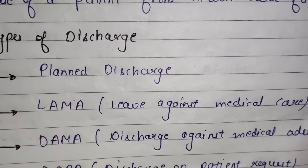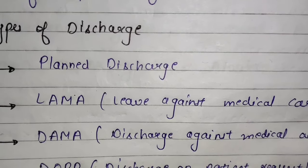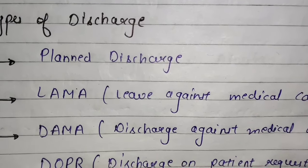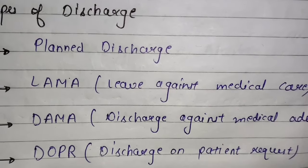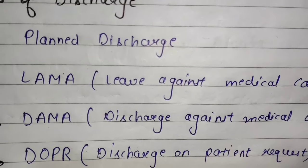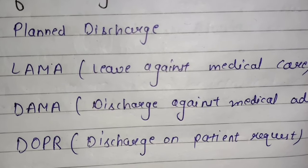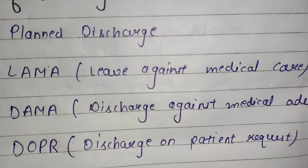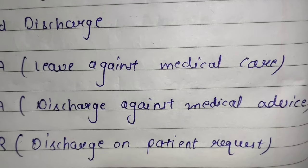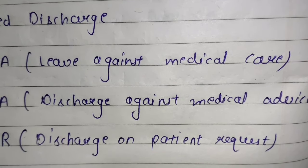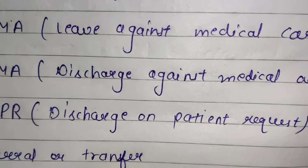Third is DAMA — discharge against medical advice — ismein jo patient hota hai, apne aap ko khud discharge kar leta hai hospital se; jo discharge hota hai, wo doctor provide nahi karta. Next, DOPR — discharge on patient request — ismein patient ko discharge mil jata hai on request. Jab patient request karta hai hospital mein, tab usko discharge mil jata hai. Ismein patient hospital ko chhoda medical advice ke against, but with the consent of treating doctor.